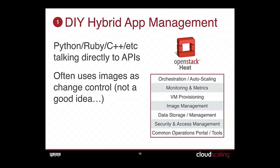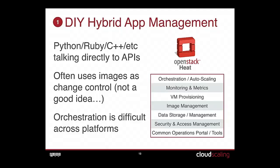The problem is sometimes people use images as a kind of change control, and that's not a great idea. Even if you're building from scratch in Python and really know what you're doing, orchestration is going to be pretty tricky. Your libraries might work well on AWS and mostly well on OpenStack, but you're going to have to figure out something else entirely for Rackspace or Microsoft Azure.